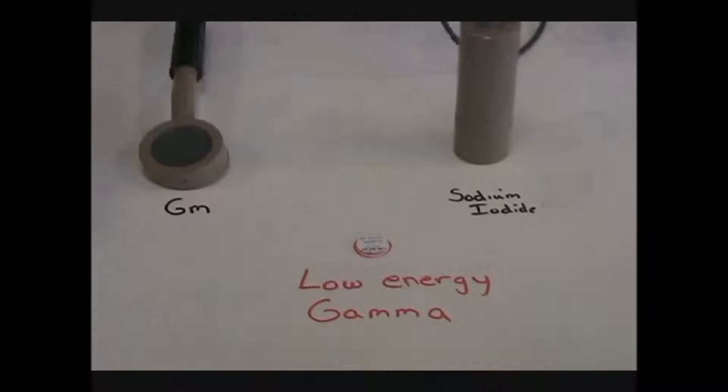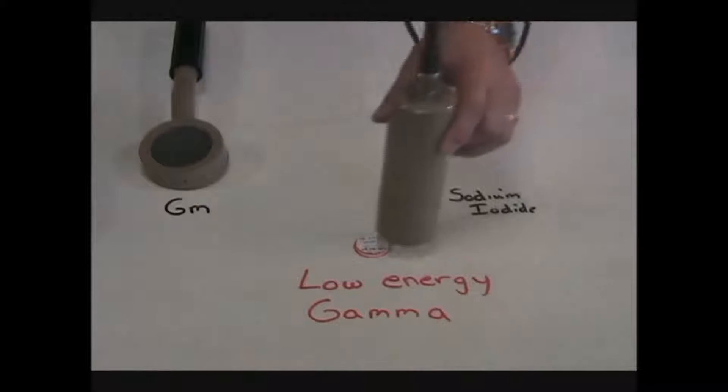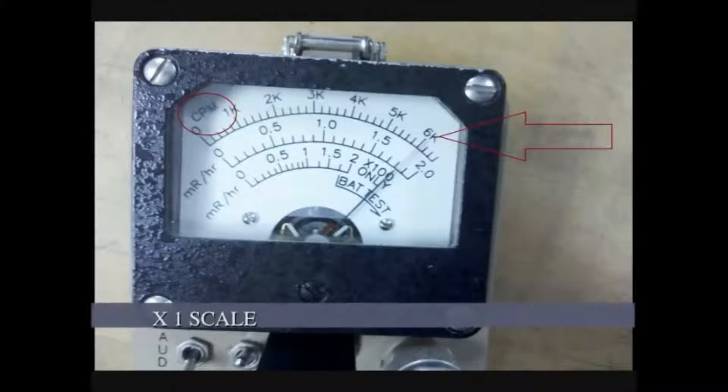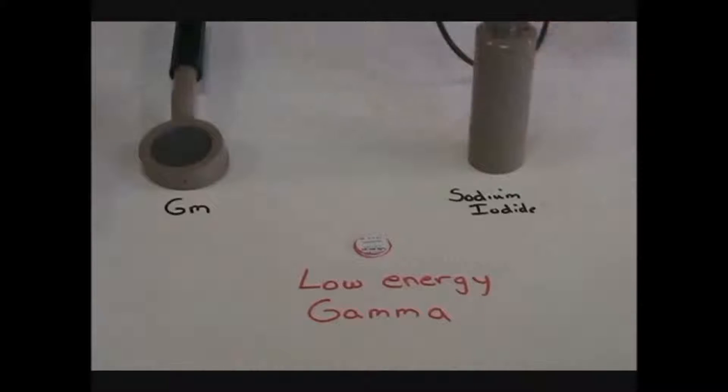A sodium iodide detector with a thin crystal, like this model 44-3 detector, will be much more efficient. Where the GM will measure only 300k per minute, the low energy sodium iodide detector will measure 6000k per minute.